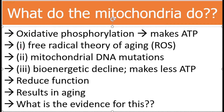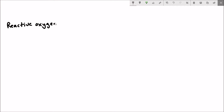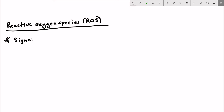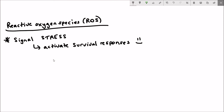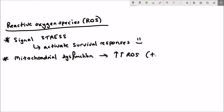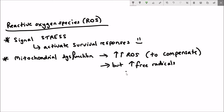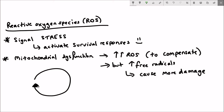As with the other antagonistic hallmarks, these are thought to be beneficial at homeostatic levels but damaging when too intense. For reactive oxygen species, there is evidence both supporting and opposing their role in promoting aging. ROS signal stress and activate survival responses, but when there is too much oxidative species it can cause more damage and advance the aging process.